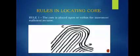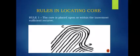Rule 1 for locating core: the core is placed upon or within the innermost sufficient recurve. In this figure, we have three sufficient recurves. Under this rule, we choose the core that is placed on the innermost sufficient recurve.